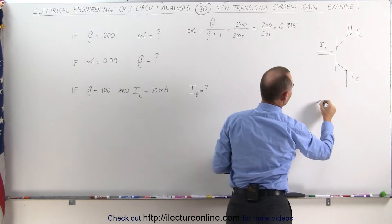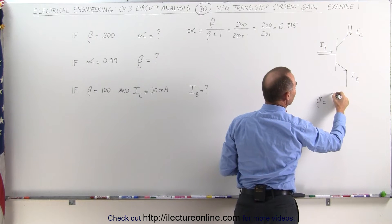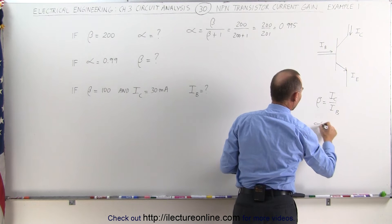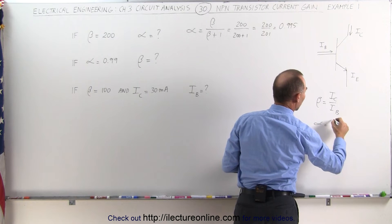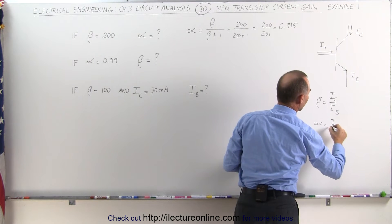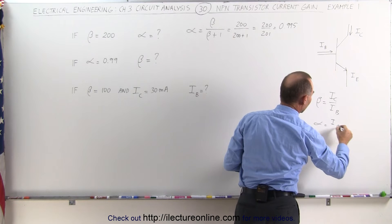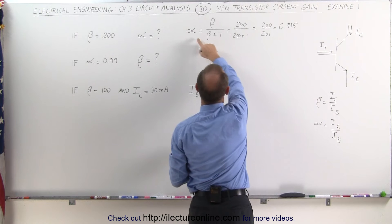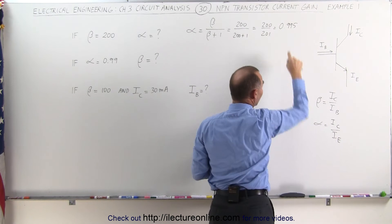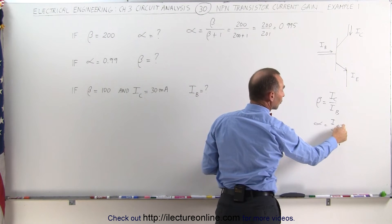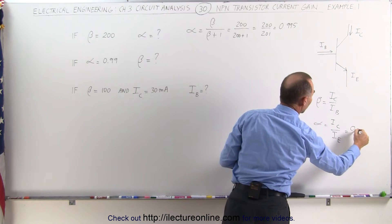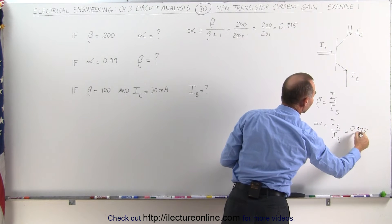Remember what the definitions are of beta. Beta by definition is equal to the relationship between the collector current and the base current. And alpha is equal to the relationship between the collector current to the emitter current. So that means that alpha is 0.995, which means the ratio of the collector current to the emitter current is 0.995 to 1.